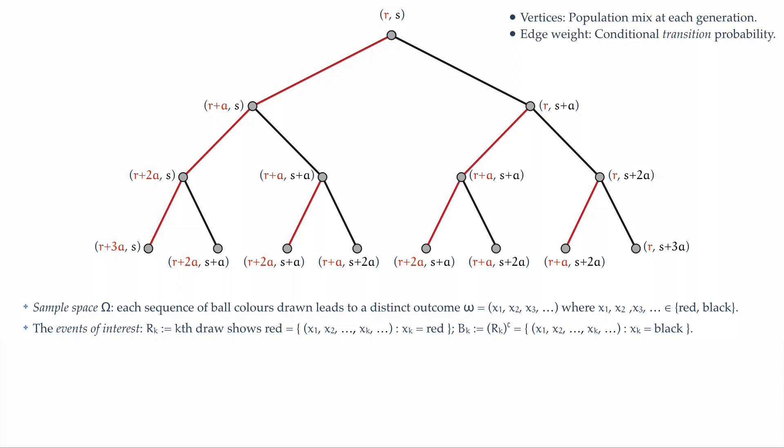Excellent. Now we've got the events at hand. We now want an implicit probability measure, and let's build this one step at a time. First, start at the root and move to a red ball drawn. The population has now become R plus a red balls, s balls. The probability of drawing a red ball initially, naturally, is proportional to the number of red balls in the bin, and therefore it's R over R plus s.